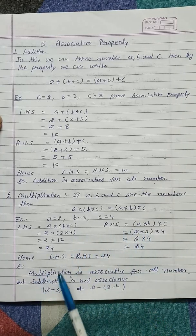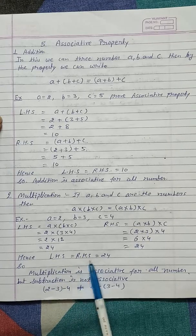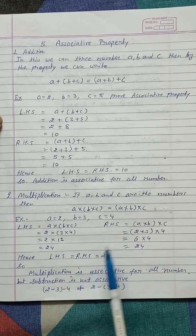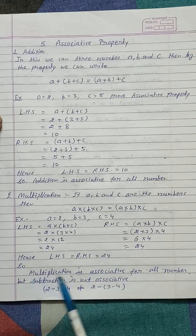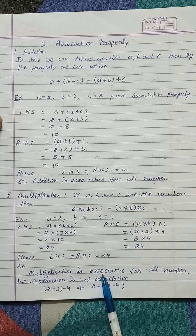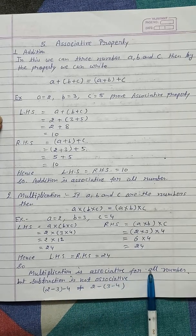So by these two expressions we can say LHS equals RHS which equals 24. Hence multiplication is associative for all numbers.